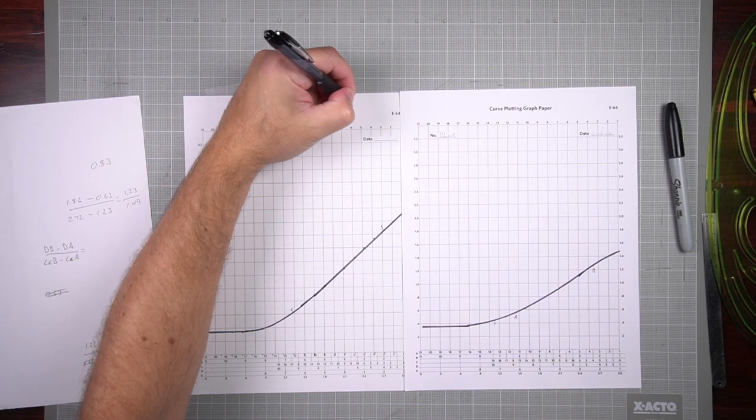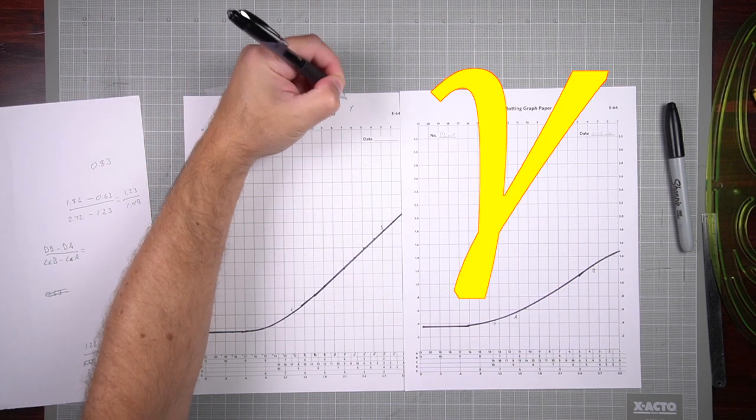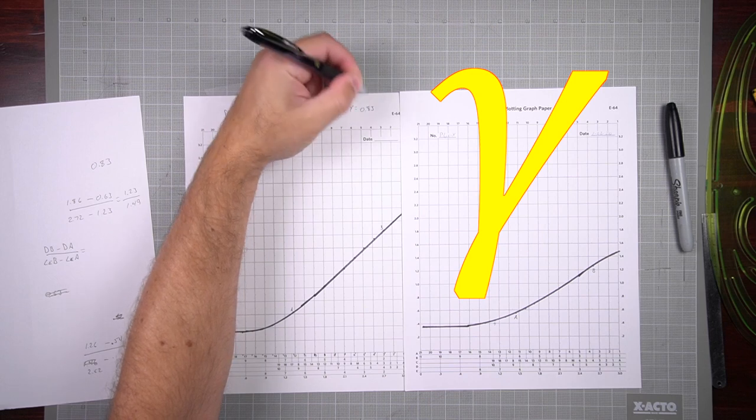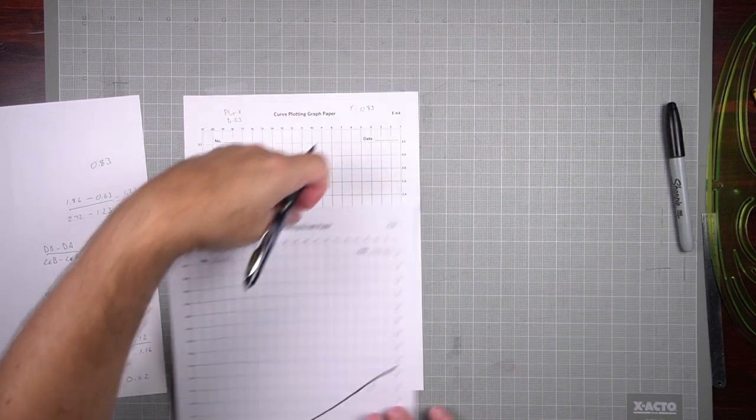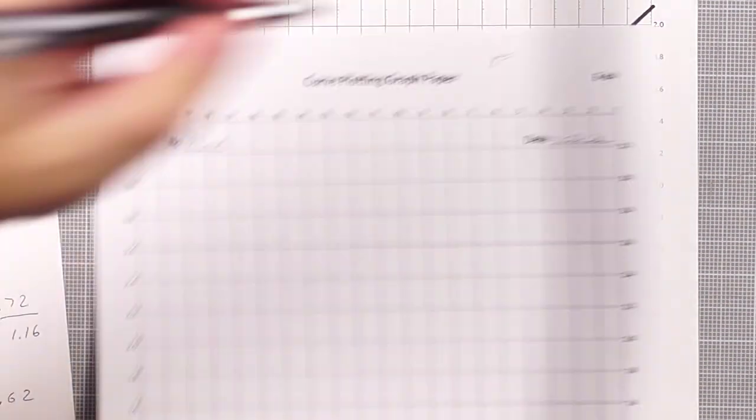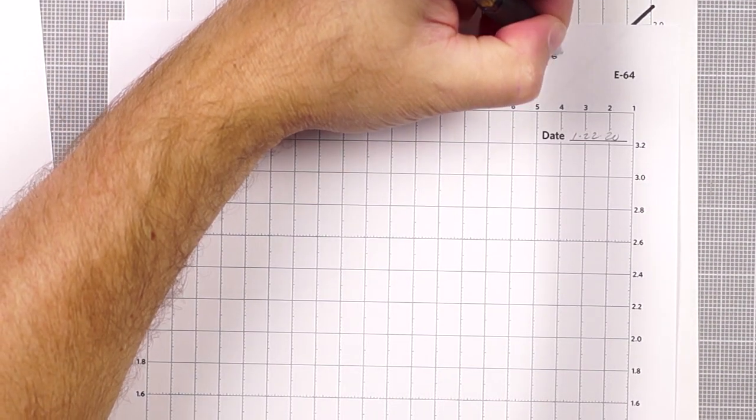So 0.83, and gamma is kind of a Y shape. So gamma here is 0.83 and the Y shape is 0.62. So that's my gamma for each one. And there we can see the effect of two different developers on the same film.